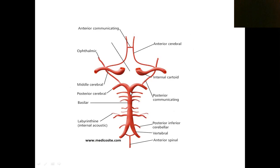The basilar artery divides into two posterior cerebral arteries. To recap: two vertebral arteries join together to form the basilar artery, and the basilar artery then divides to form two posterior cerebral arteries.